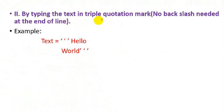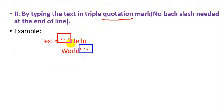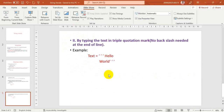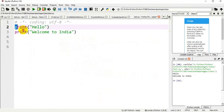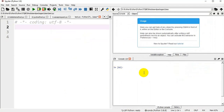The second method is by typing the text within triple quotation marks. You open triple quotes, type the first part such as 'hello', then on the next line type 'world', and close with triple quotes. To demonstrate the backslash method: print('hello' backslash, then 'world') — it will print 'hello world' as a single string.